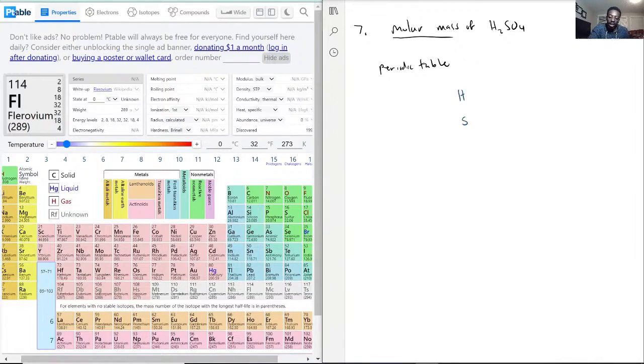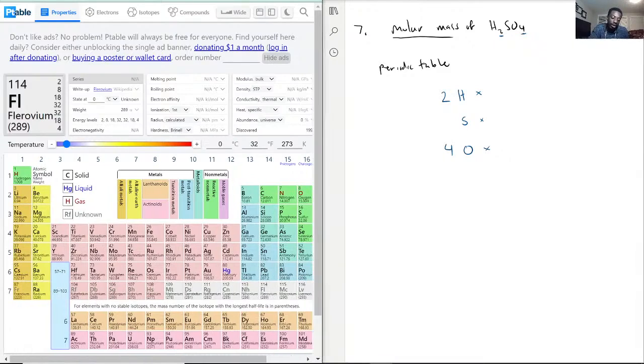S, and O. But as you see here with the subscripts, it has 2H, 4O. So now we have this, we multiply that by each molar mass on the periodic table.